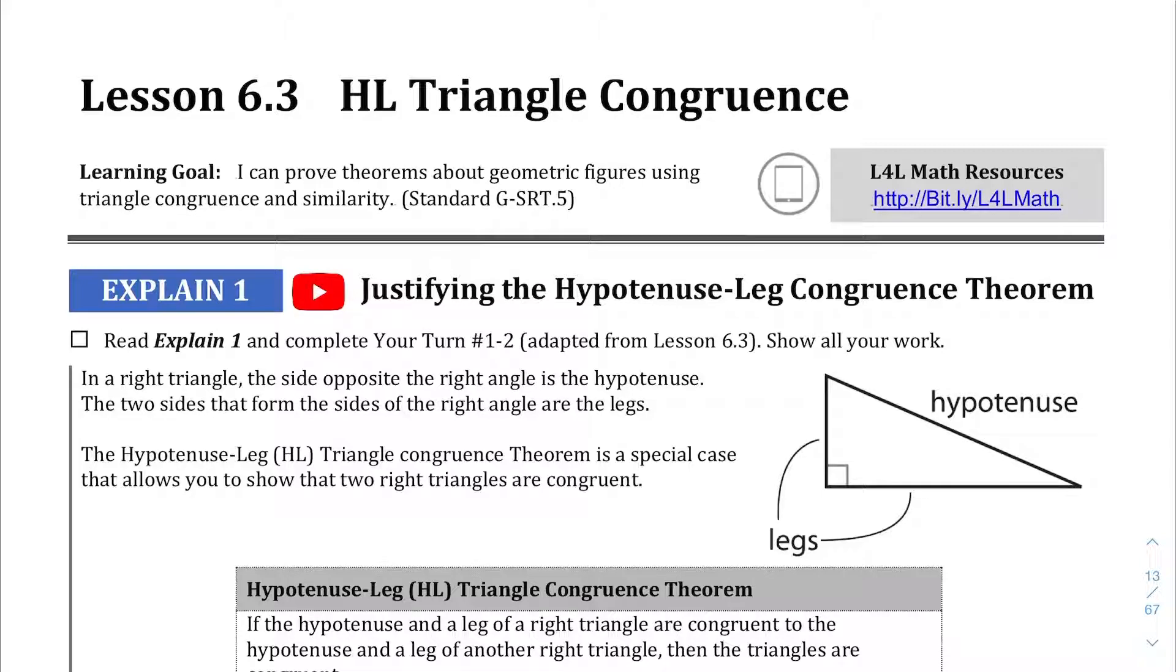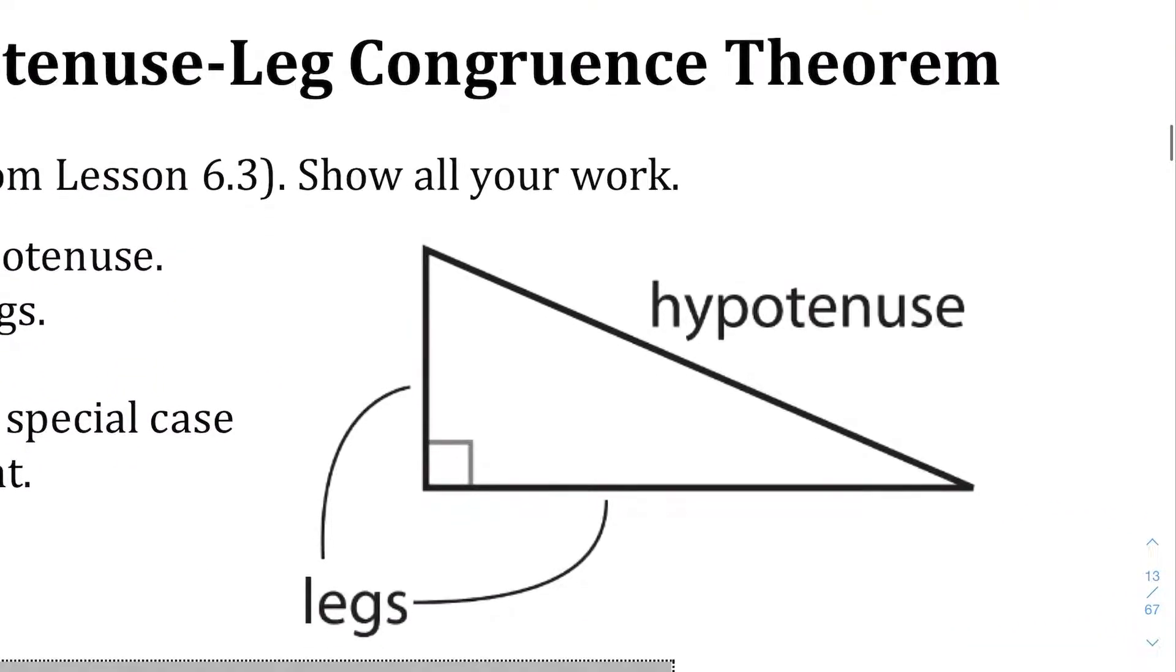And now we have one that just says hypotenuse leg. That's what the H stands for, hypotenuse, and then leg. So if this is your first time taking geometry and you don't remember covering the Pythagorean theorem extensively in algebra, or maybe you missed previous criteria, or maybe it's just been a while, you might be wondering, what the heck is hypotenuse?